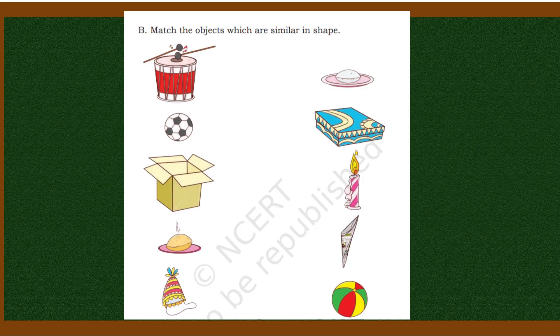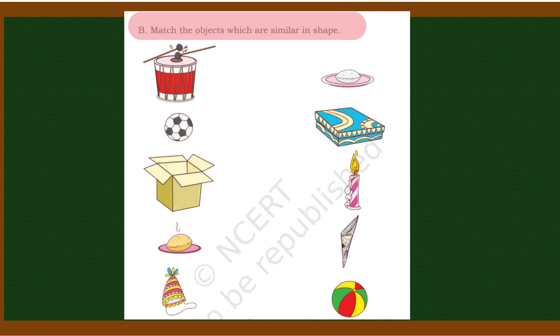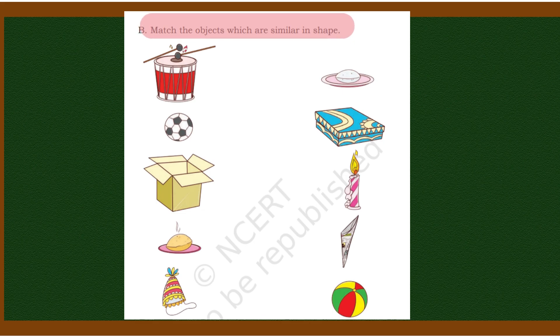Now let's see the next part. Here it is saying: Match the objects which are similar in shape. Whichever objects - objects means things - whichever things you see here with the same shape, you have to match them together.